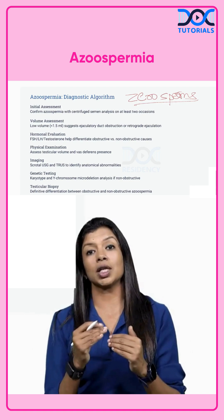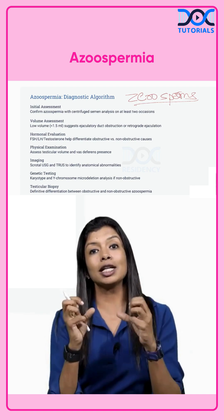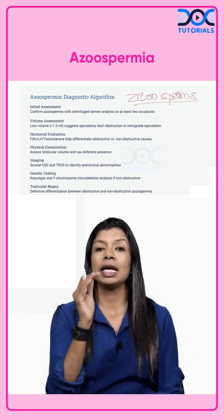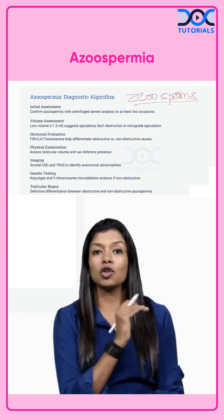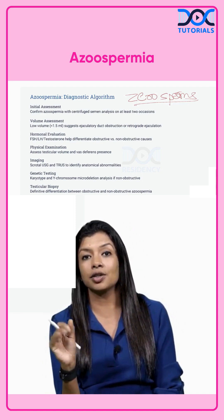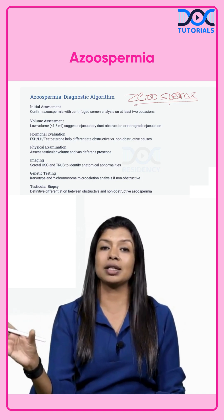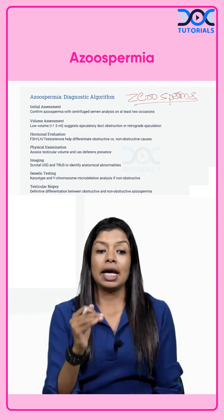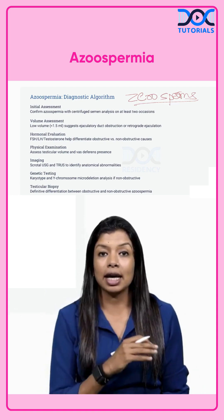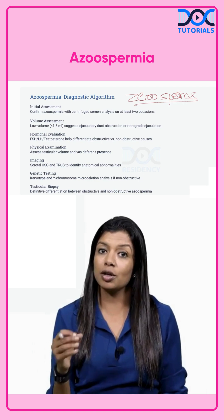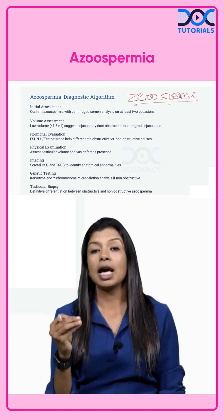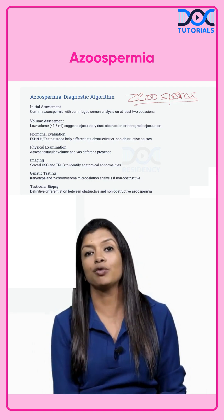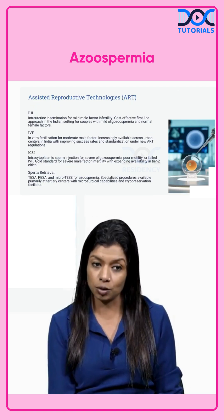Then you go to physical examination, which will tell you the size of the testes. If it is fibrous, it will indicate a testicular disease. Then you go to imaging technologies like scrotal USG and transrectal ultrasound to show whether it is an obstruction or any hypothalamic cause. Then you go to genetic testing like karyotyping and Y-chromosome microdeletion for prognostic protocols. And finally, you do a testicular biopsy, which is an invasive test to find out the cause of azoospermia.